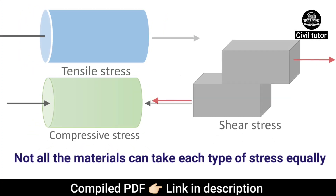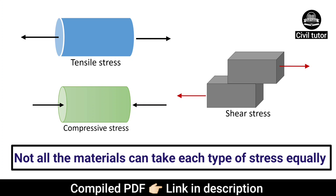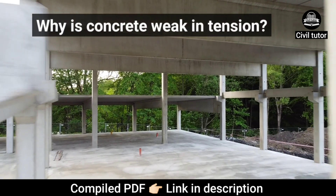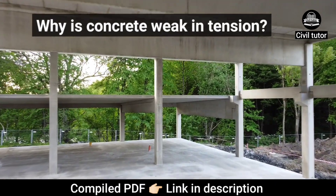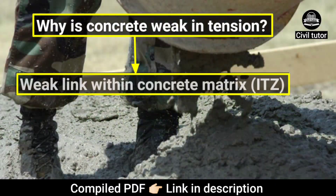It has been observed that not all the materials can take each type of stress equally. If we talk about concrete, it is very strong in compression and very weak in tension. Now the question arises: why is concrete weak in tension? Concrete is weak in tension because of the presence of a weak link within the concrete matrix known as interfacial transition zone or ITZ.